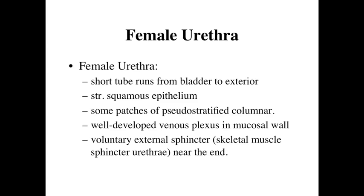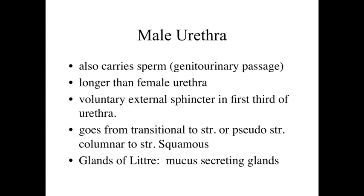Within the female urethra, it's going to be a relatively short tube, running from the bladder to the exterior. In contrast, the male urethra is going to be much longer than the female urethra. Anatomically it runs in the same general location, but it's going to run through the tip of the penis, and it's going to be used for a combination of urinary passage — release of waste materials within urine — as well as being involved with the reproductive tract, because it carries sperm. The external sphincter is going to be located in about the first third of the male urethra, and the epithelial lining of the male urethra runs from a transitional epithelia to a stratified or pseudostratified columnar, to ultimately a stratified squamous epithelia.